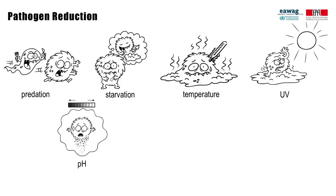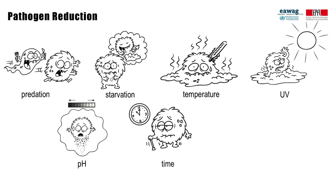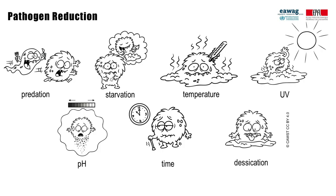pH or other chemical changes can inactivate pathogens, as most microorganisms thrive only within a range of 2 to 3 pH units. Time is important in processes with long retention times, like planted drying beds of up to 10 years. Desiccation or dehydration — for example, in processes like pelletizing that can reach 90% dryness — could be combined with time as storage or temperature as external heat to achieve safe levels of pathogen reduction. Pathogens can also be reduced through sorption, for example, when helminth eggs sorb to solids and settle out in settling thickening tanks or remain with the sludge layer on a drying bed.